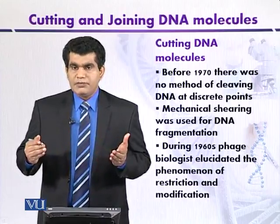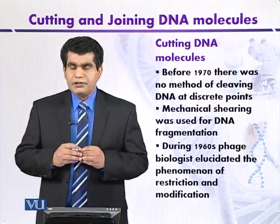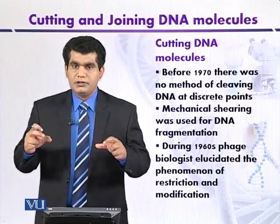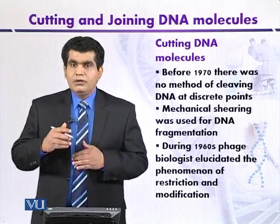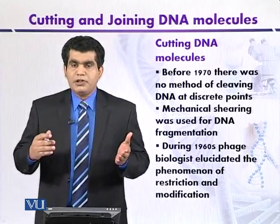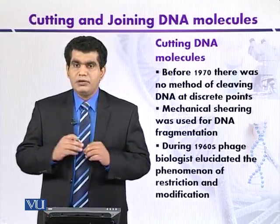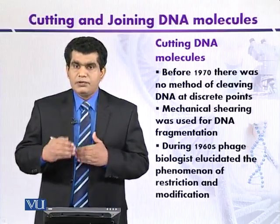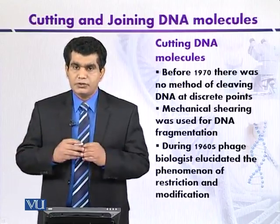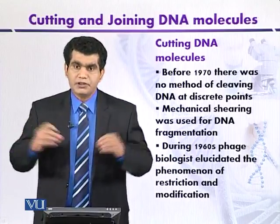Before the 1970s, methods that could cut DNA into discrete fragments were not available. Without fragments of a particular size, further work could not proceed — DNA cannot be manipulated into a suitable vector until we have fragments of a reasonable length. Even if some restriction enzymes were available, they were not suitable, which we will discuss later on. Some chemical methods were available, but they produced very short fragments of DNA.